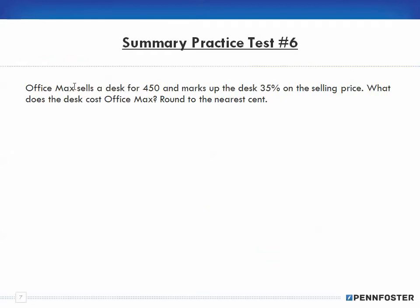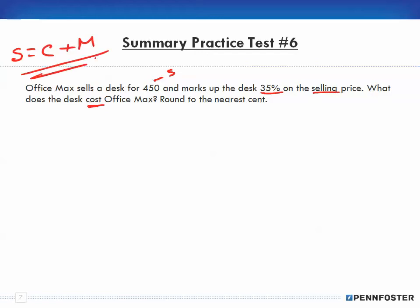Problem six: Office Max sells a desk for $450 — that's the selling price — and marks up the desk 35% on the selling price. What does the desk cost? We don't know the cost. Notice that all of these problems are very similar; there's just a slight little twist, and they're all based on the same formula.